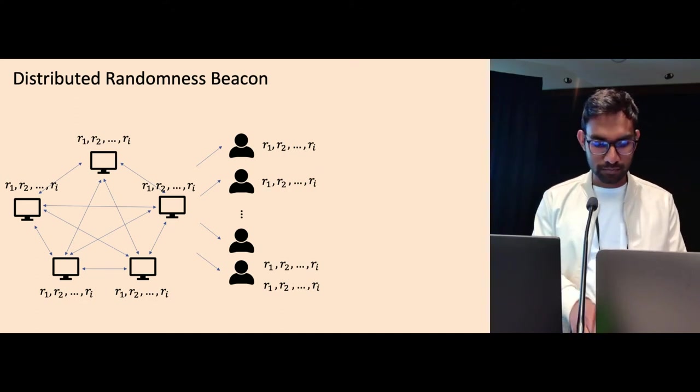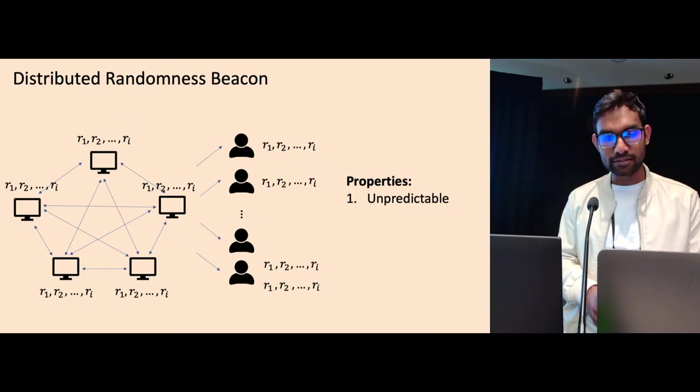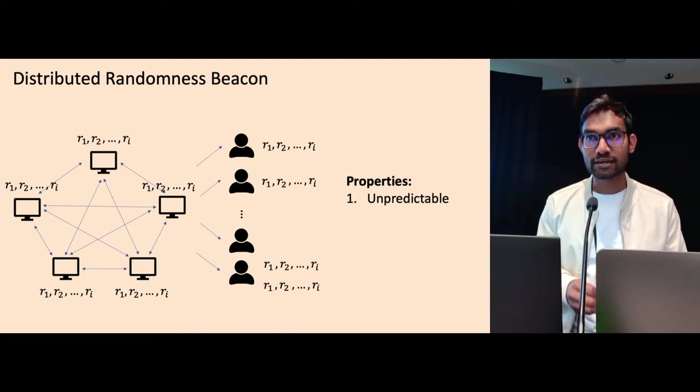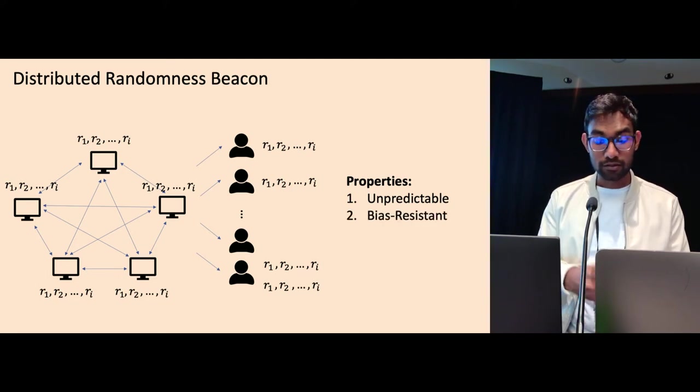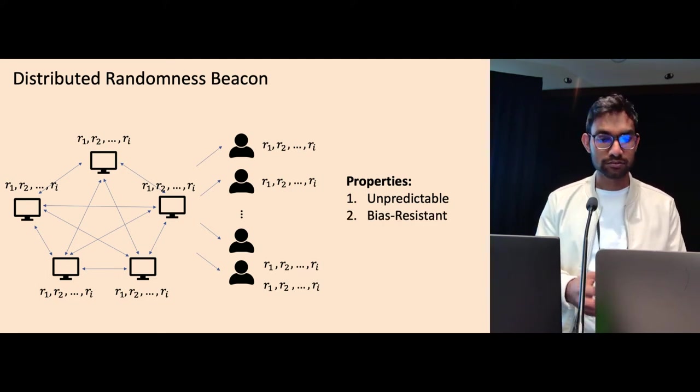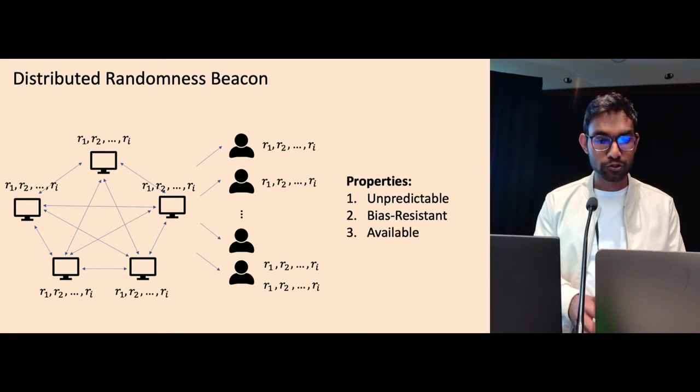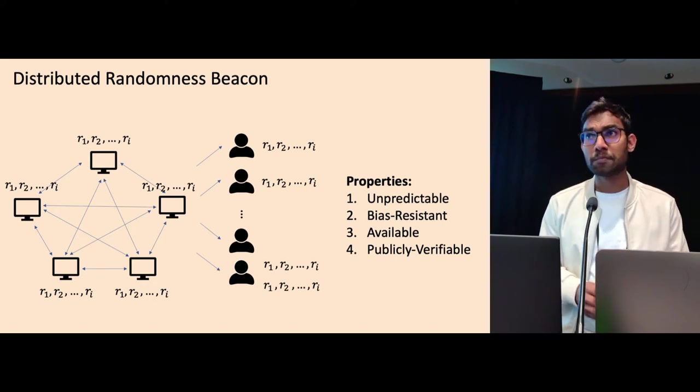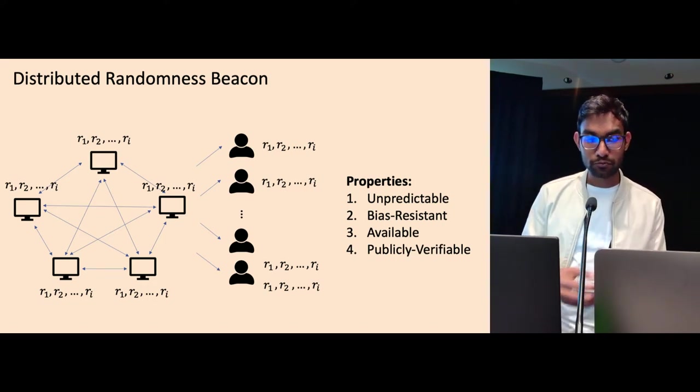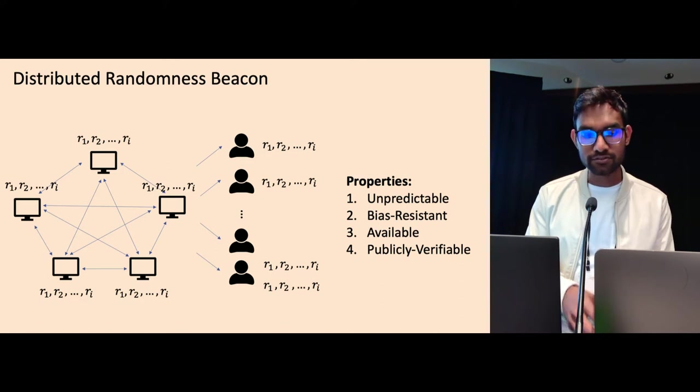We can formalize the properties that we want as we want unpredictability that says the future random output should be unpredictable to the adversary, even if it corrupts a fraction of the nodes. The beacon output should be bias resistant, so that the output should be uniformly random, and the protocol should always produce fresh outputs, and the output should be publicly verifiable by any other users who is not part of the beacon generation protocol.